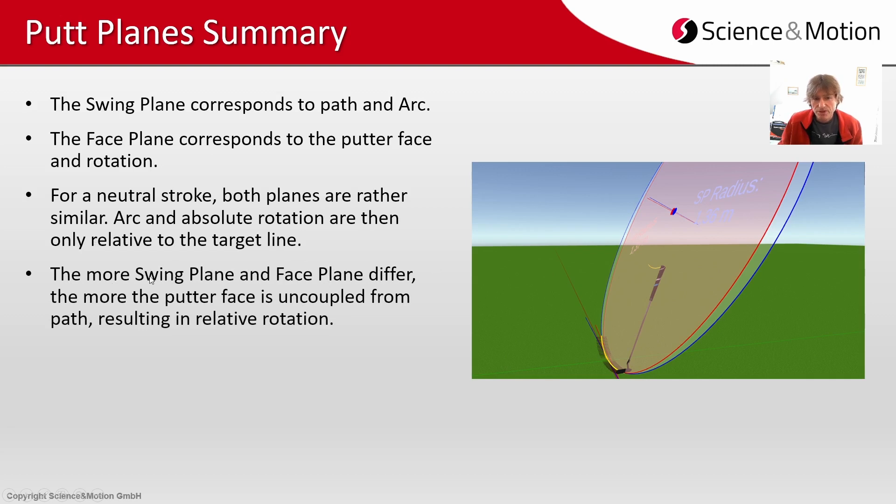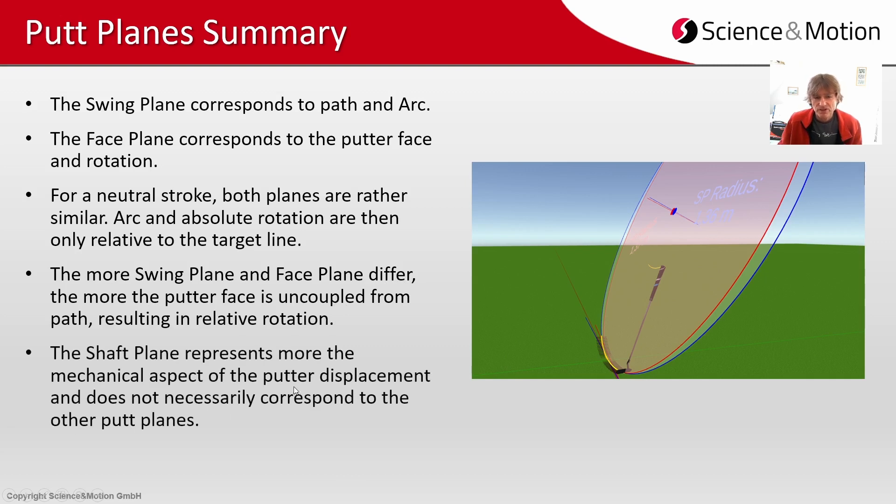Now the more swing plane and face plane start differing the more the putter face is uncoupled from path resulting in relative rotation. And the shaft plane represents more the mechanical aspects of the putter displacement and does not necessarily correspond to the other putt planes.